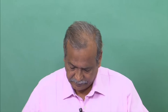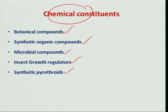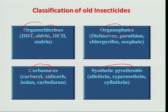Based on chemical constituents, pesticides are classified as botanical compounds, synthetic organic compounds synthesized using many chemical groups, microbial compounds derived from bacteria, fungi, nematodes, and viruses, insect growth regulators using molting hormone and juvenile hormone compounds, and synthetic pyrethroids which are photostable, required in low quantity, and have low mammalian toxicity. Conventionally, old insecticides are broadly classified as organochlorines, organophosphates, carbamates, and synthetic pyrethroids.